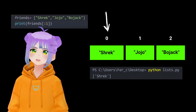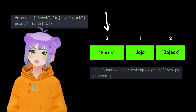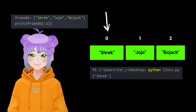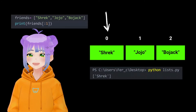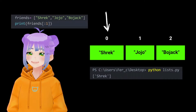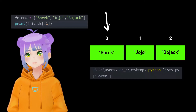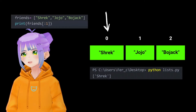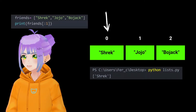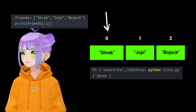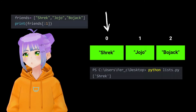So what happens if I just leave the first argument empty? What you're telling Python is to start from the very beginning of the list. And if you put a colon followed by a second argument — for example, one — you are telling Python that you want to start from the very beginning of the list up to, but not including, index number one.